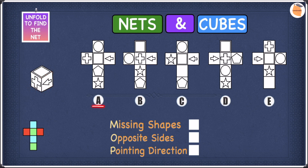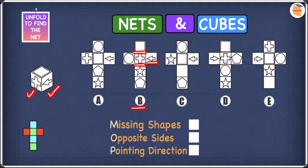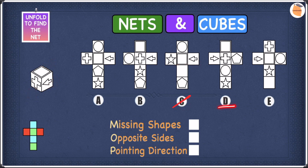Let's have a look at A. In A, we have the arrow, we have the plus sign, and we have the square — so that's fine. In B, we have the arrow, we have the plus, and we have the square, so B is also fine. In C, we have the arrow and the square, but we do not have a plus. Because we're missing one of the shapes, we can go ahead and cross off C. In D, we have the square, we have the arrow, and we have the plus, so D is also fine.